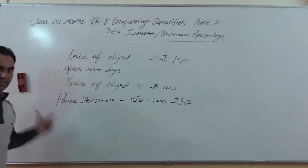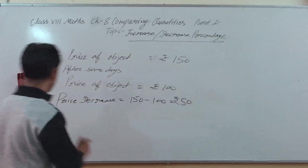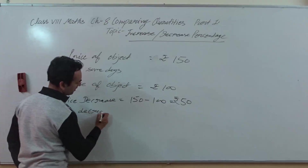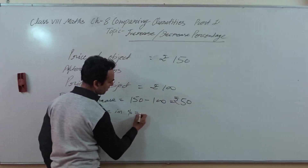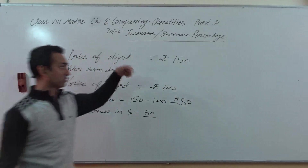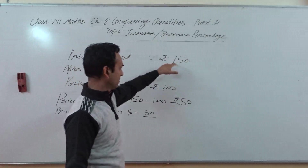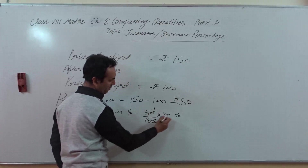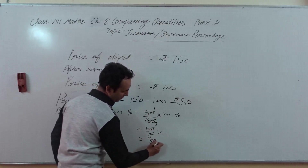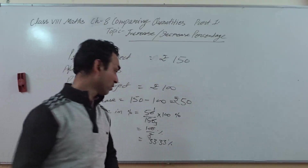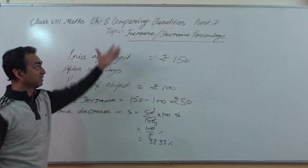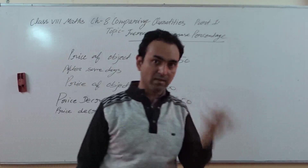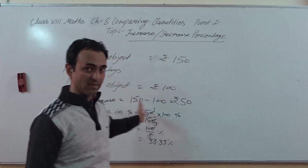So 50 rupees is the difference, but we have to find how much the price decreased in percentage. Price decrease in percentage equals 50 out of the first price, which was 150 — always take the first price — into 100 percent. So 50 upon 150 into 100 equals 100 upon 3, which equals 33.33 percent. So the price of the object decreased by 33.33 percent. This is how you find increase and decrease percentage: first find the difference of the data, then find it in percentage.